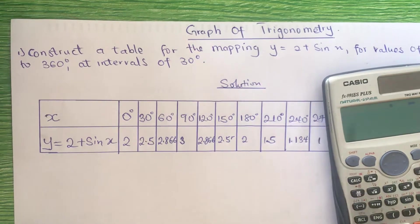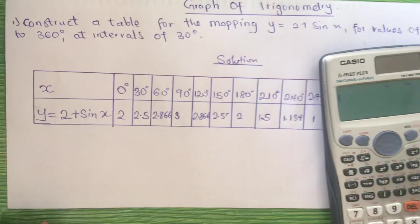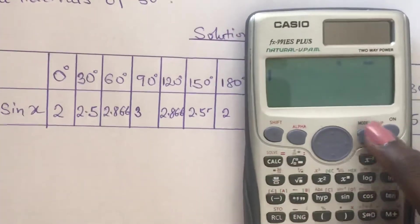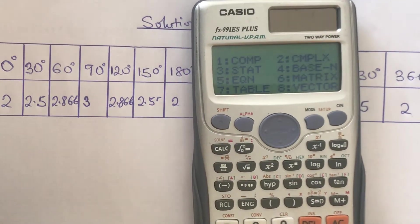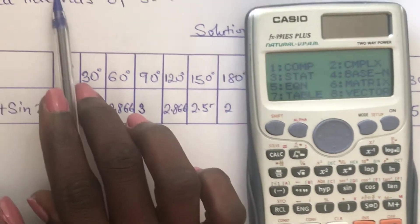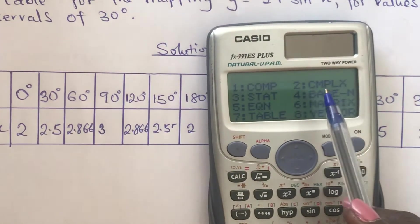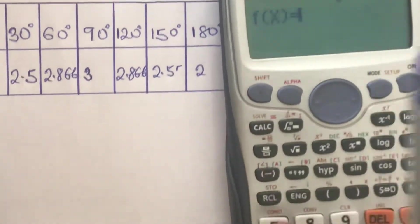For us to use the calculator, we have to make sure our calculator is on. Then we press on the mode key. It is construct a table, so we will select number 7, which is table.